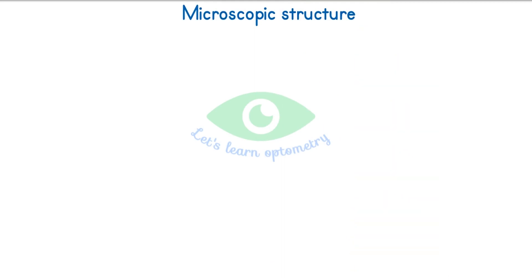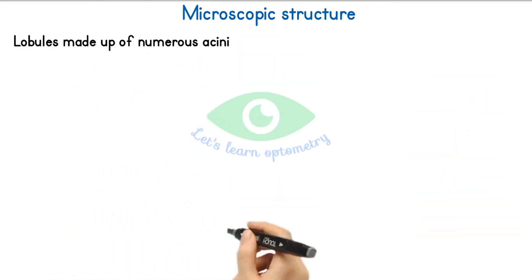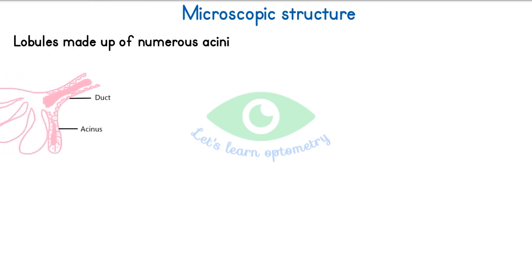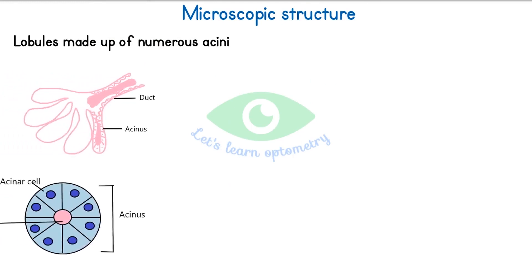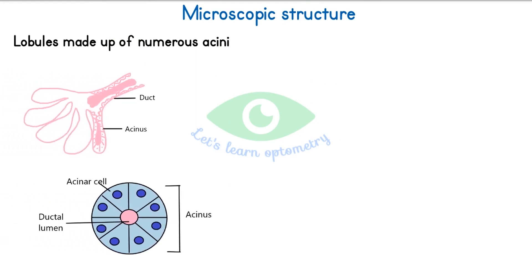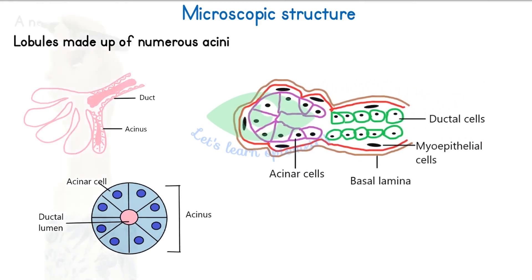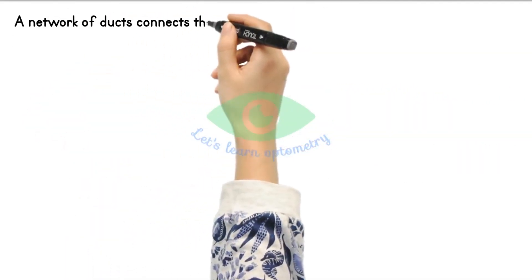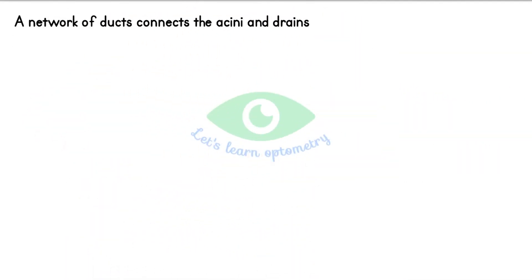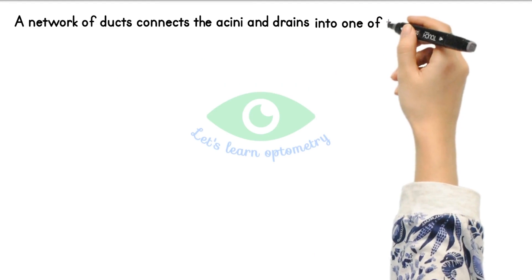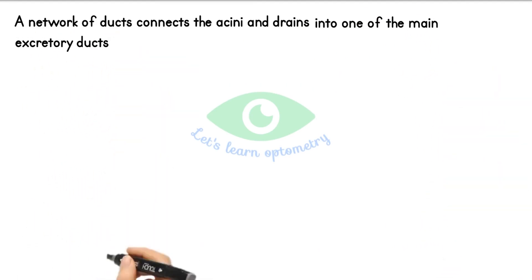Microscopic structure: the lacrimal gland consists of lobules made up of numerous acini. Each acinus is an irregular arrangement of secretory cells around a central lumen, surrounded by an incomplete layer of myoepithelial cells. A network of ducts connects the acini and drains into one of the main excretory ducts.